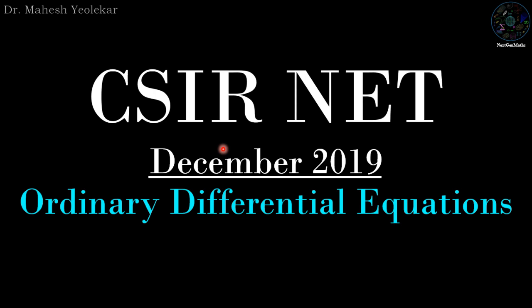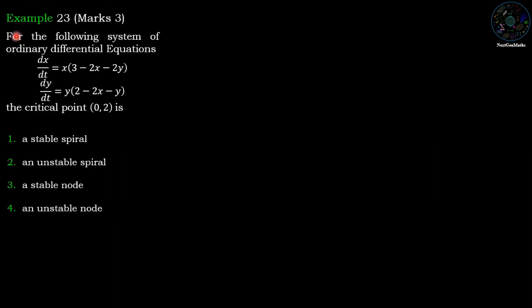Welcome friends. In this video we are going to discuss the problem of CSIR NET December 2019, a problem of ordinary differential equations. For the following system of ordinary differential equations: dx/dt = x(3 − 2x − 2y) and dy/dt = y(2 − 2x − y).